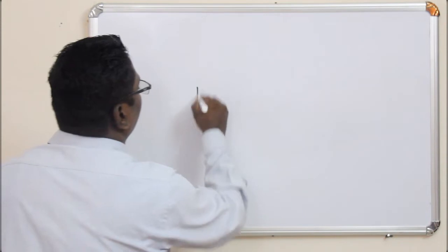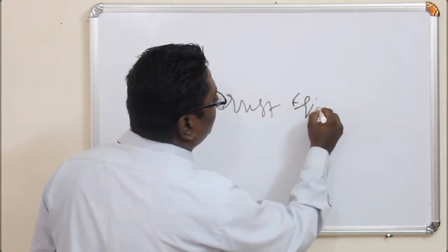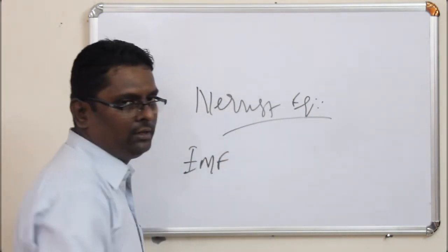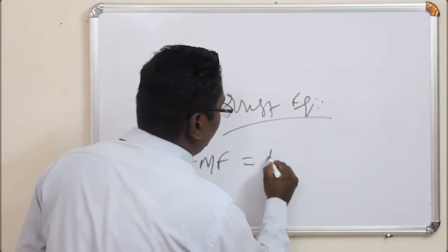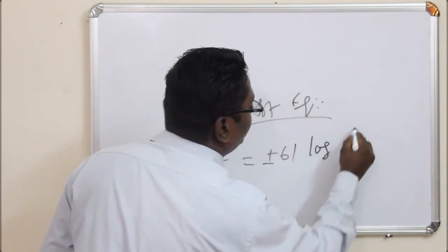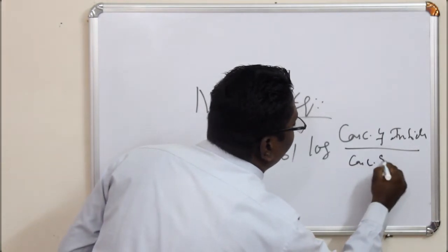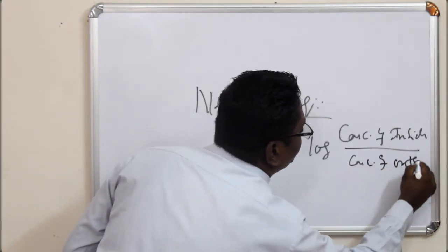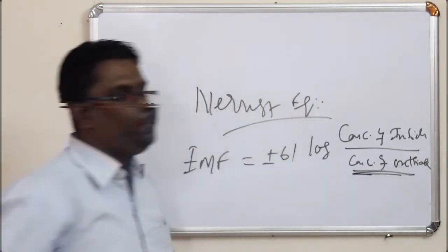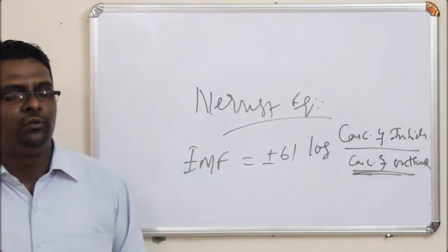Nernst Potential is calculated using the Nernst equation. In the Nernst equation, we calculate the electromotive force by the formula: EMF is equal to plus or minus 61 log of concentration of a substance inside divided by concentration of that particular substance outside. This is the formula for calculating the Nernst Potential for a particular ion.